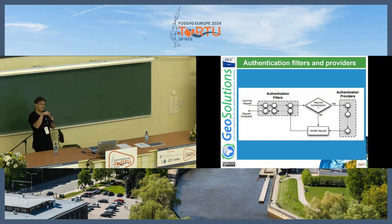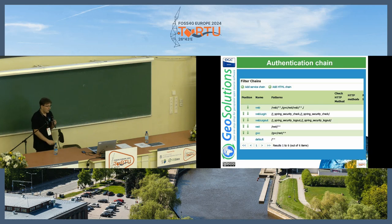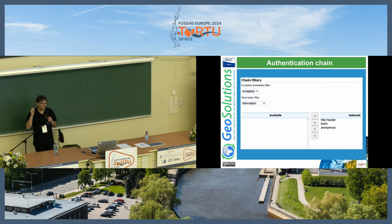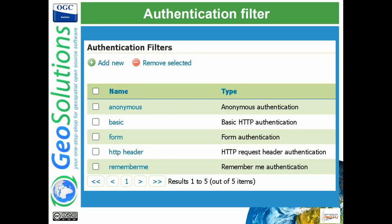If the filters figure out there are authentication tokens that require attention, they send the tokens to the authentication providers, which are the ones that can figure out whether a username and password are valid, or whether an authentication token is valid. You can have multiple chains attached to different endpoints. For example, this is the OGC services authentication chain, where we allow typically HTTP basic authentication, eventually an HTTP header, eventually something else. In the web authentication chain, you have form authentication because you have username and password at the top of the page. So each area of GeoServer can have different authentication mechanisms.